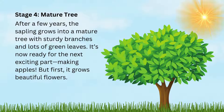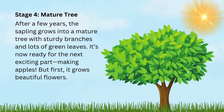Stage 4: Mature Tree. After a few years, the sapling grows into a mature tree with sturdy branches and lots of green leaves. It's now ready for the next exciting part — making apples! But first, it grows beautiful flowers!